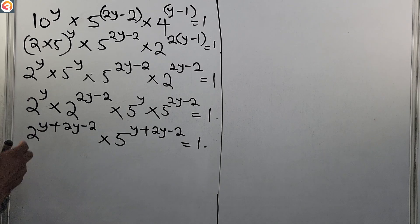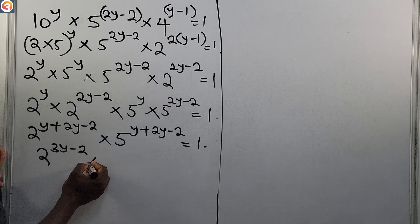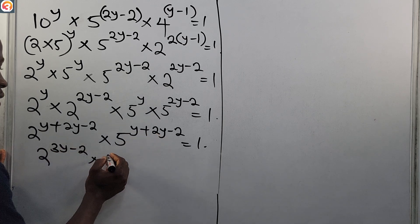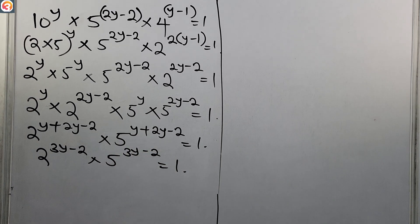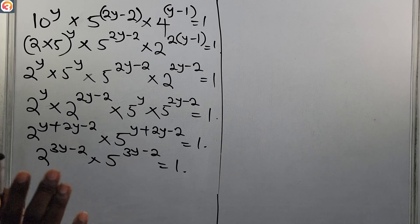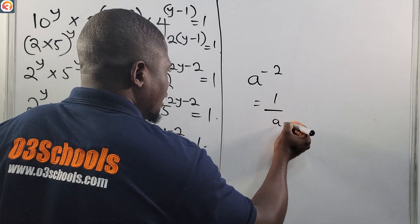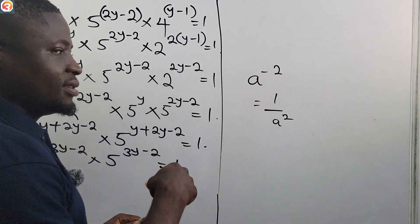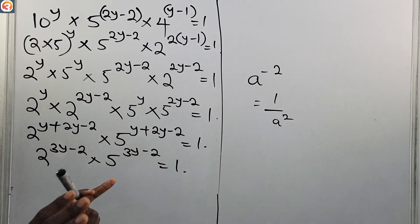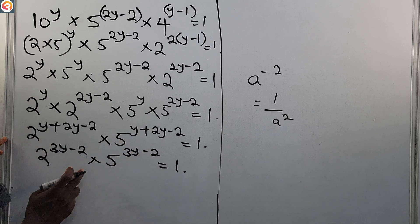Simplifying: y plus 2y is 3y, so we have 2 raised to power (3y minus 2), times 5 raised to power (3y minus 2), equals 1. From the law of indices we also know that a raised to power minus 2 is the same as 1 over a raised to power 2 — we invert and the negative sign goes off. If you do not know the laws of indices, please watch our episode on indices on our YouTube channel, All Three Schools.